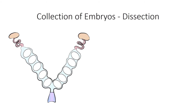Following implantation, embryo collection requires dissection. Upon establishing contacts to the maternal tissue, the maternal endometrium decidualizes around the embryo. For dissection, first the uterine horns are cleaned from surplus fat tissue and vasculature. Then oviducts and vaginal vault are removed and the decidual swellings parted through cutting.